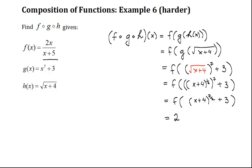So, this becomes 2 times x plus 4 to the 7 over 2 plus 3, our numerator. And the denominator becomes x plus 4 to the 7 over 2 plus 3 plus 5.